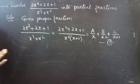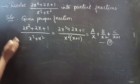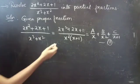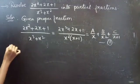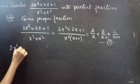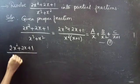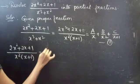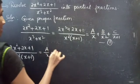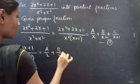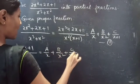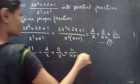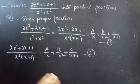You have to simplify this equation and find the values of unknowns a, b, and c. So: 2x squared plus 2x plus 1 by x squared into x plus 1 equals a by x plus b by x squared plus c by x plus 1. Consider this as equation 2.